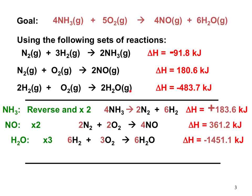For the last equation, H2O is on the right-hand side and O2 is on the left-hand side — everything is in the appropriate location, so no flipping is necessary. However, the coefficient for H2O is only 2, and we need 6, so we need to multiply all coefficients by three. We multiply everything through by three and also multiply the delta H value by three to give our new delta H for this specific equation.